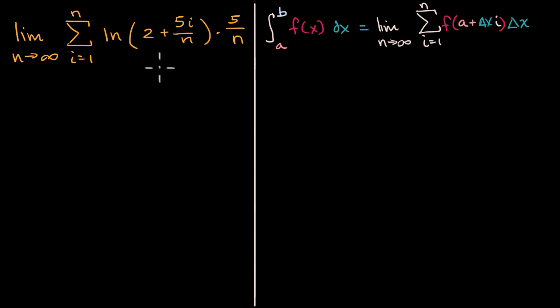And so one possibility, you could even do a little bit of pattern matching right over here. Our function looks like the natural log function. So that looks like our f of x. It's the natural log function. So f of x looks like the natural log of x. What else do we see? Well, a, that looks like two. A is equal to two.